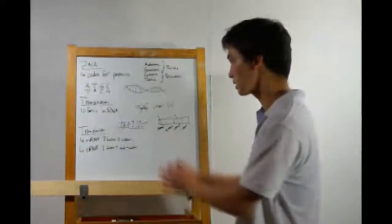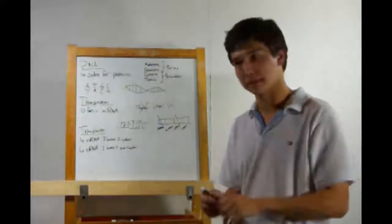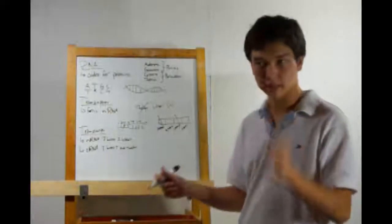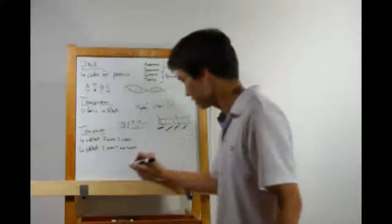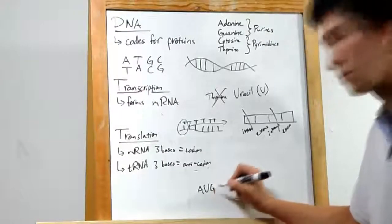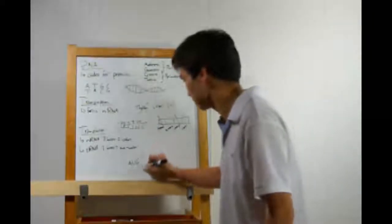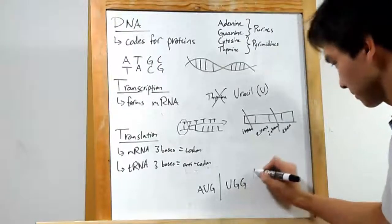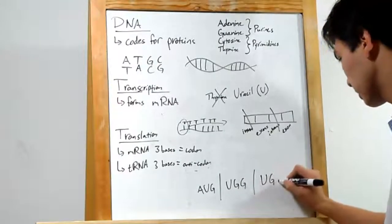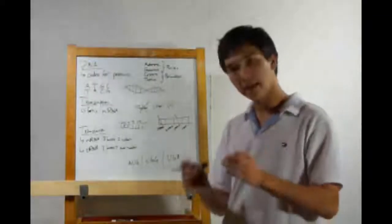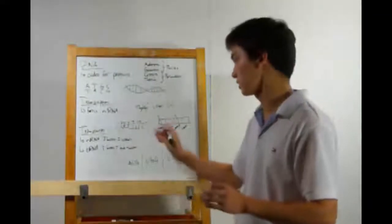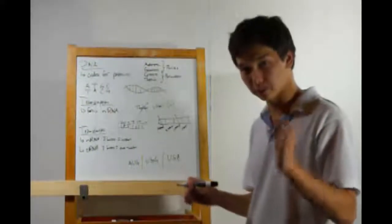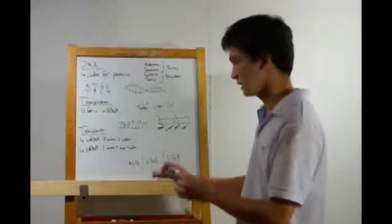On to translation. This occurs when the mRNA reaches the ribosome. Whenever you see a sequence of mRNA bases, it's usually written out in threes, like AUG. I tend to draw a line between them to distinguish. And then UGG, UGA, so on and so forth. Every three bases in mRNA is known as a codon. The reason this is so important is because mRNA is read three bases at a time by something called tRNA.